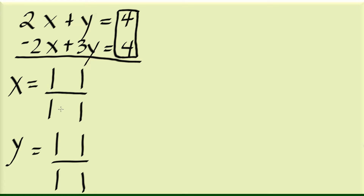Now the denominators for x and y — we're going to start with this box down here. Write down the coefficients of the x and y terms. The first coefficient is 2, and this y is understood to be 1y, so we're going to pick up 2 and 1 and place them here. Then the coefficients of our second equation are negative 2 and 3, so write down negative 2 and 3.